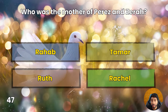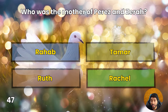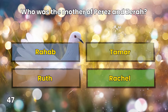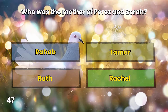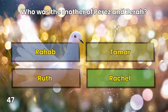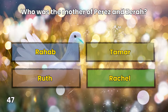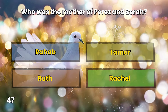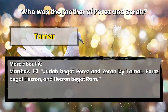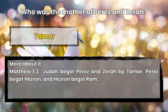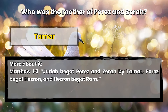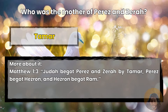Question 47: Who was the mother of Perez and Zerah? Rahab, Tamar, Ruth, or Rachel? Tamar. Matthew 1:3 — Judah begot Perez and Zerah by Tamar. Perez begot Hezron, and Hezron begot Ram.